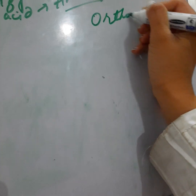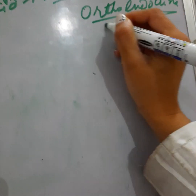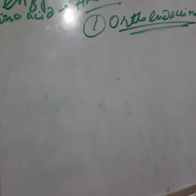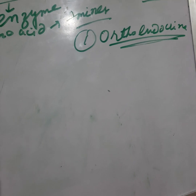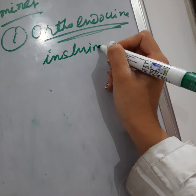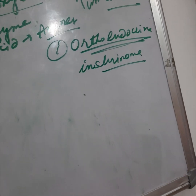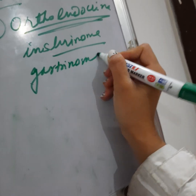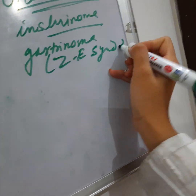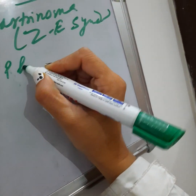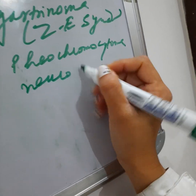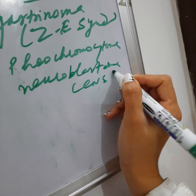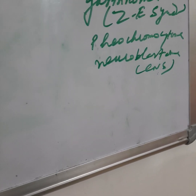The first type is orthoendocrine tumors — these are tumors secreting normal polypeptides of their cells of origin. Examples include insulinoma, which secretes insulin; gastrinoma, arising from gastric cells and associated with Zollinger-Ellison syndrome; pheochromocytoma, which is a tumor of the adrenal gland; and neuroblastoma, a tumor of the central nervous system.